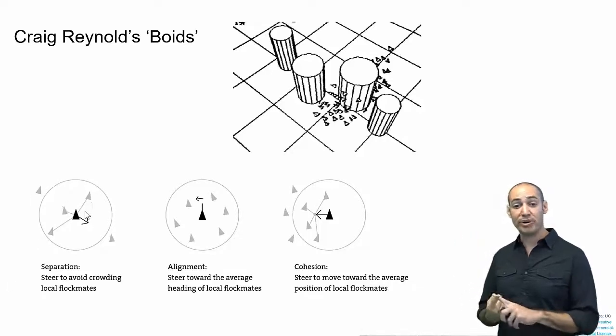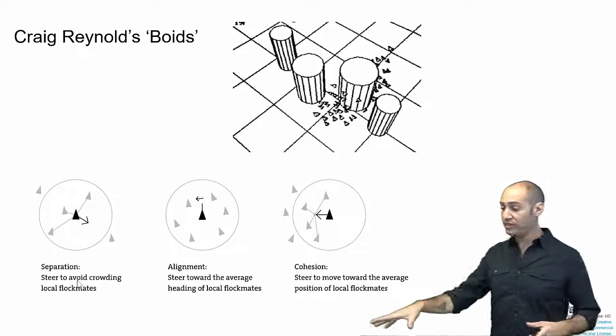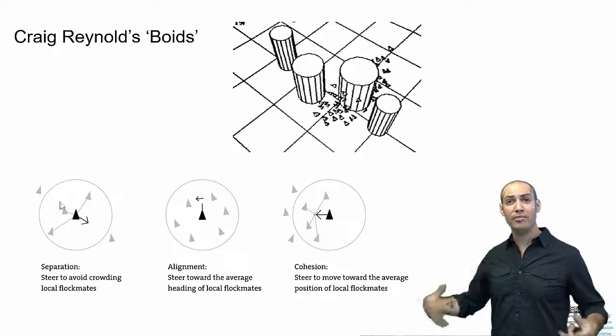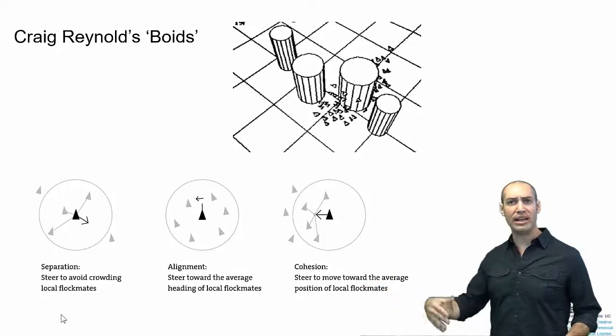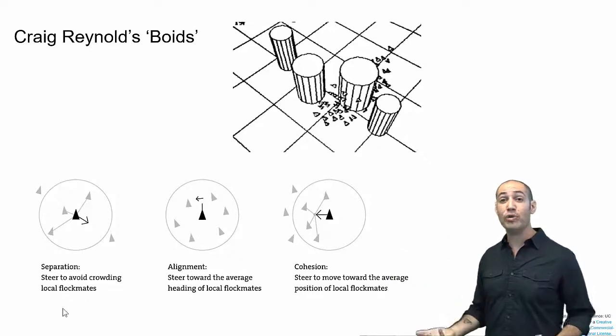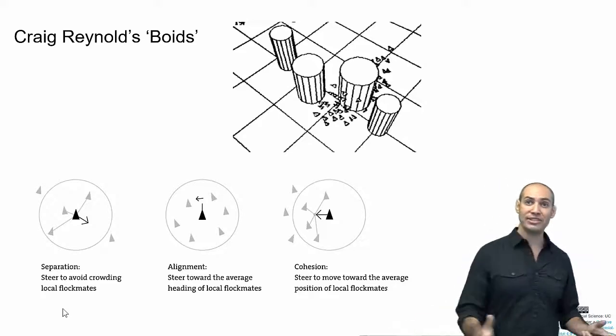What that means is separation comes first. It says, I have a vision, and I can see who's close around me, not too far, just like a real bird. You can sort of see who's near me, but I can't see the entire structure of the whole flock. Separation means I don't want to crash into anyone. So if I'm getting too close to other birds, I steer away.